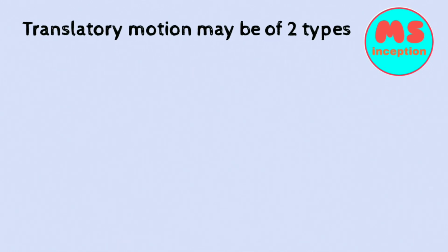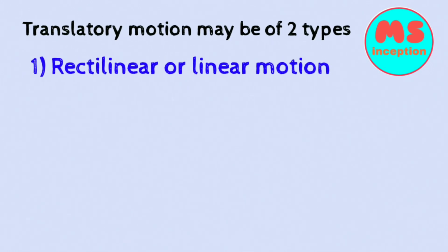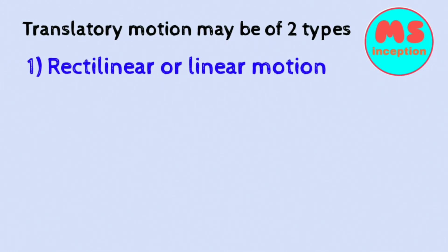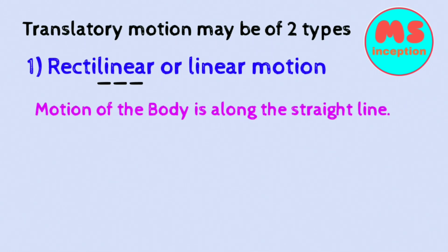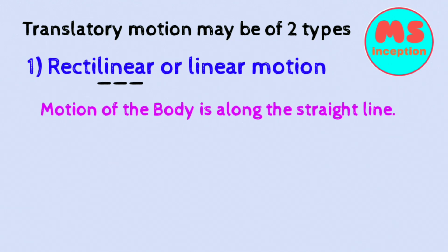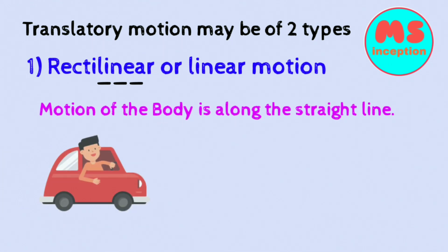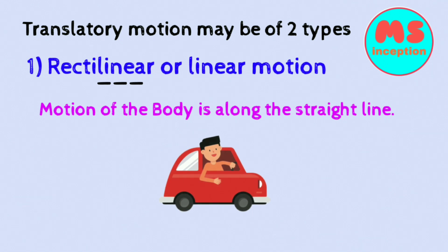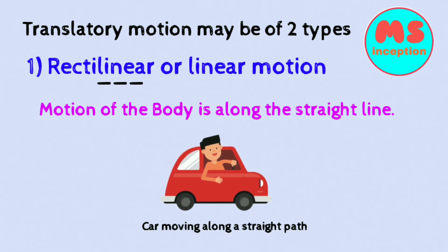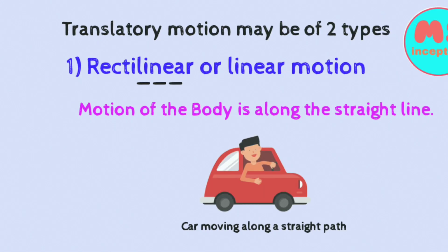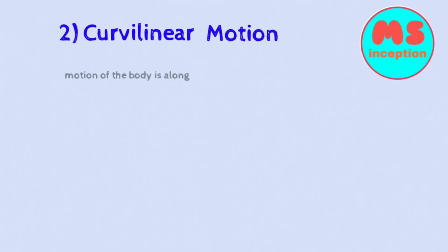Translatory motion is of two types. First is rectilinear motion — as the name suggests, the motion is along a straight line. Second is curvilinear motion, in which the motion is along a curved path.